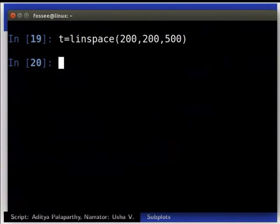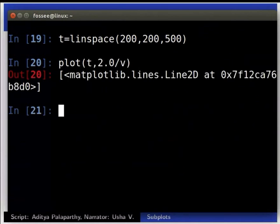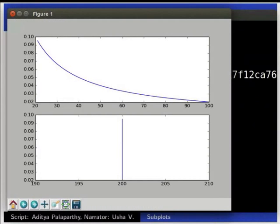Plotting this data, we get the required plot. Plot inside brackets T comma 2.0 divided by V. We can see two subplots of pressure vs. volume and pressure vs. temperature respectively.